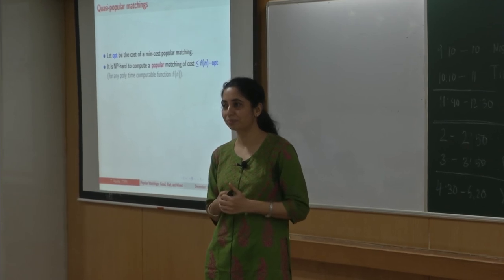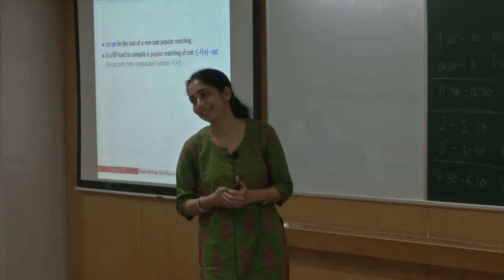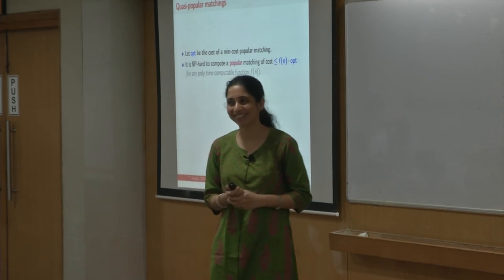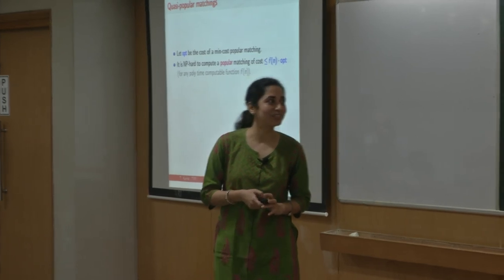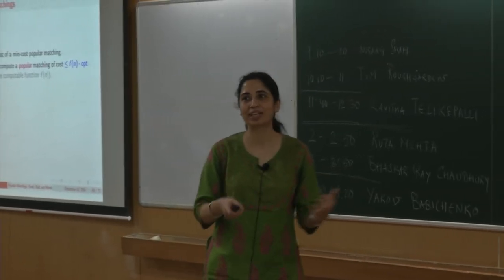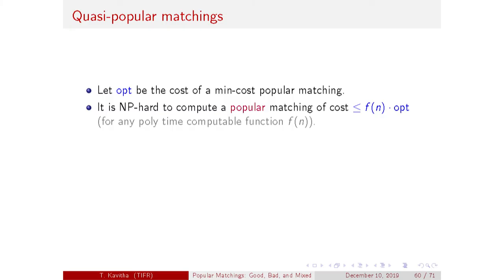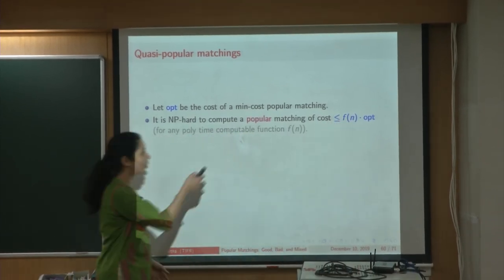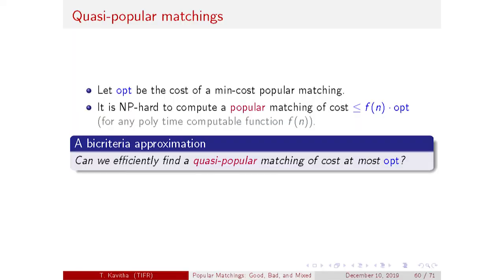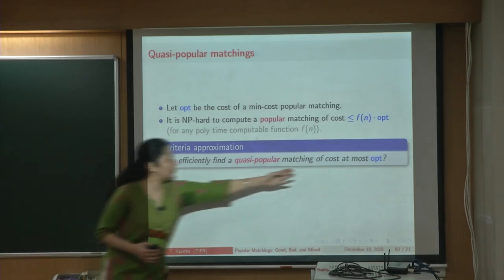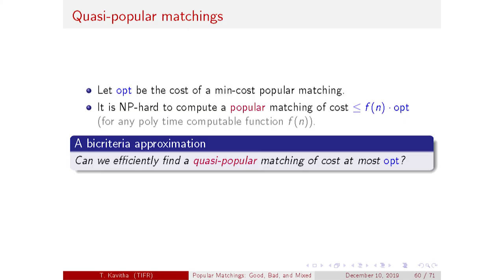The question we ask is: since finding a popular matching of any multiplicative factor times optimal cost is hard, can we ask a bi-criteria approximation question? Can we efficiently find a quasi-popular matching whose cost is no more than that of an optimal min cost popular matching? Here the answer is yes — finally a positive result. Both the popular matching polytope and the quasi-popular matching polytope have near-exponential extension complexity. However, we can show an integral polytope sandwiched between these two that has a linear size extended formulation.